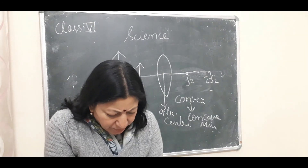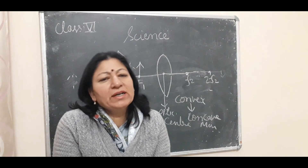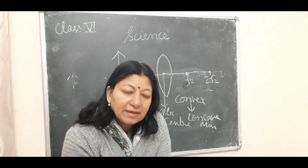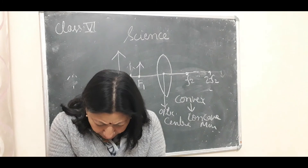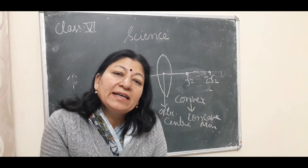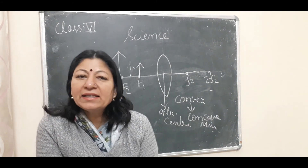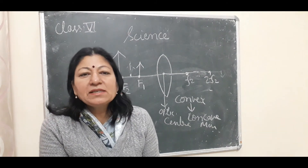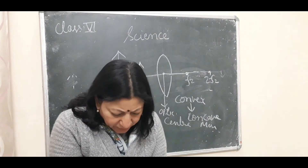We have two types of lenses. To identify them: a convex lens has sides that bulge outward and thinner edges, while a concave lens has sides that curve inward with thicker edges. The vice versa applies for concave lenses.